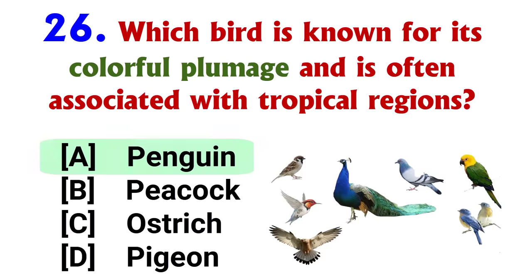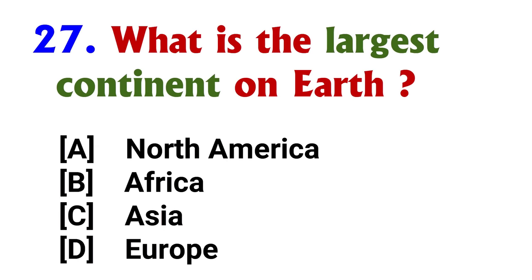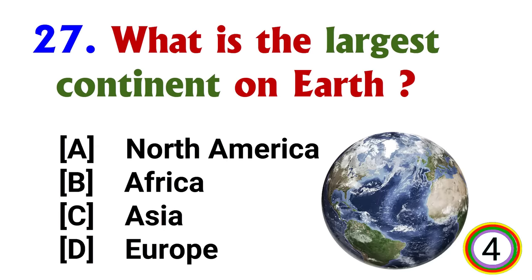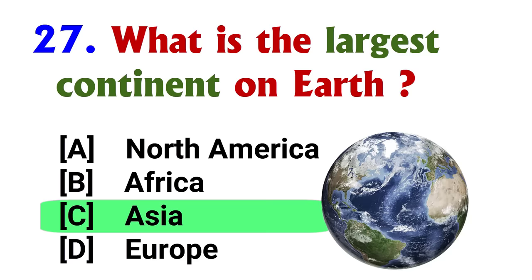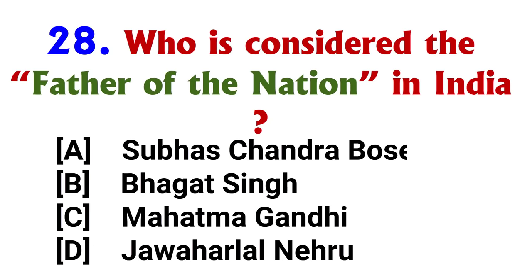What is the chemical symbol of gold? Answer: option C, Au. Which bird is known for its colorful plumage and is often associated with tropical regions? Answer: option B, Peacock. What is the largest continent on Earth? Answer: option C, Asia.